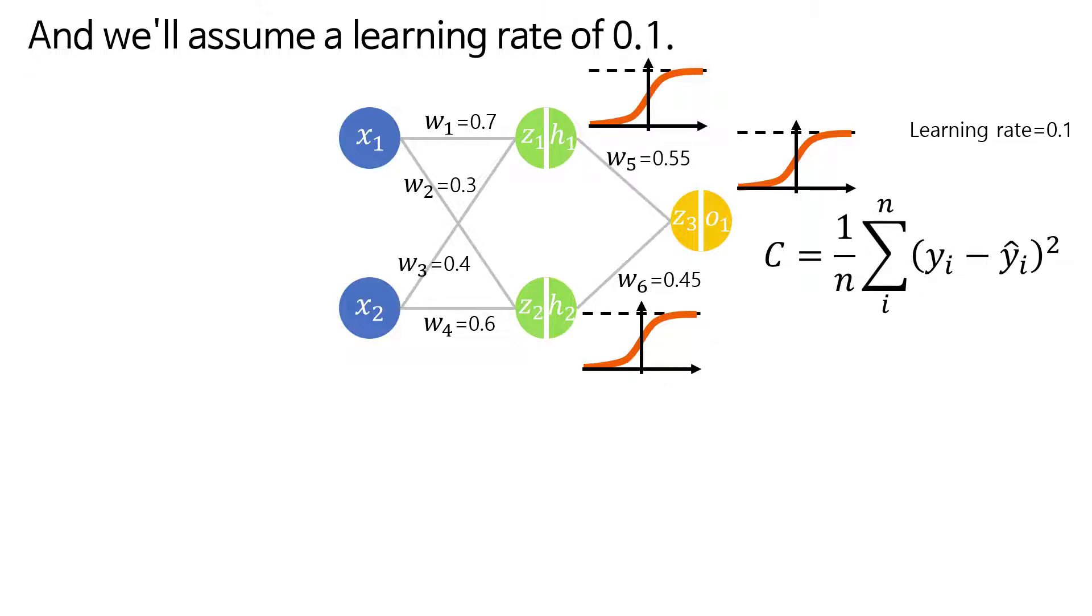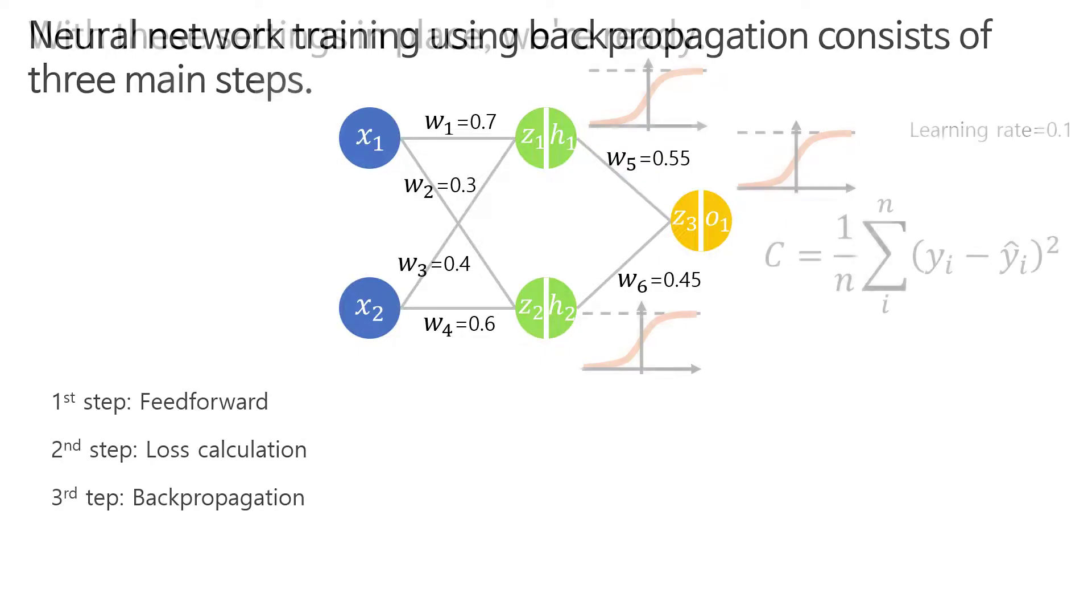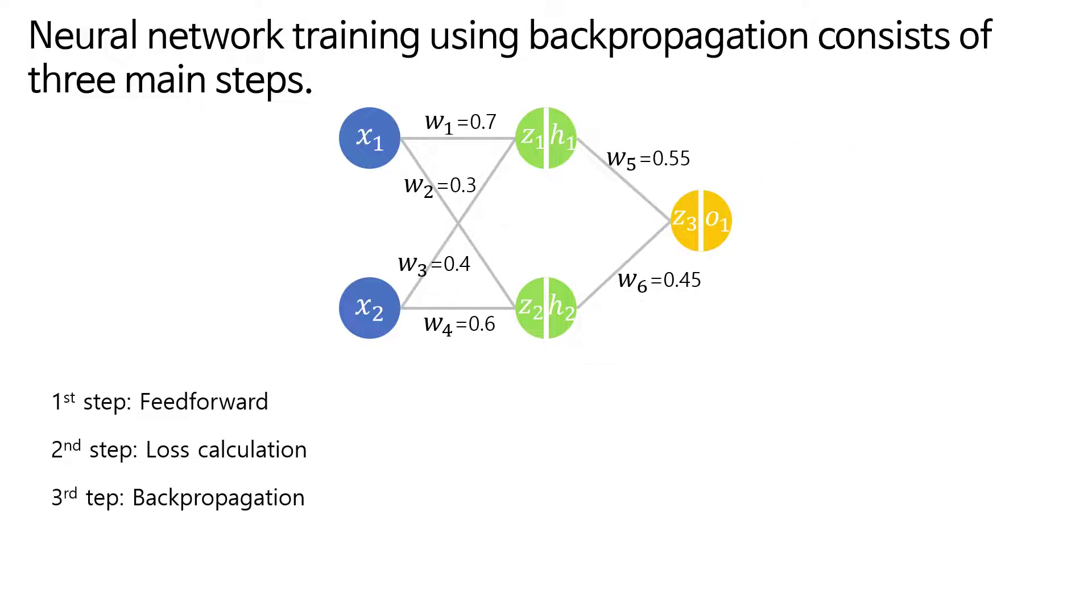We'll use the sigmoid function as the activation function and MSE as the loss function. Initially all weights are set randomly, and we'll assume a learning rate of 0.1. With these settings in place we're ready. Neural network training using backpropagation consists of three main steps.